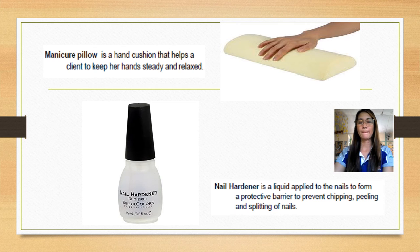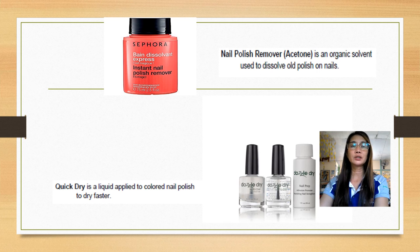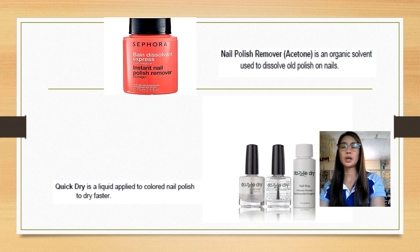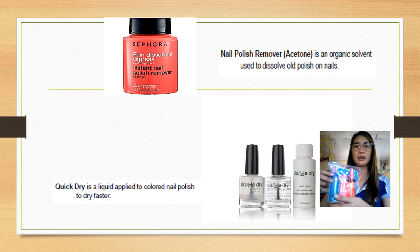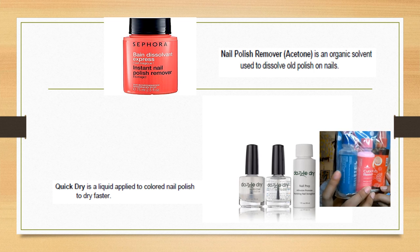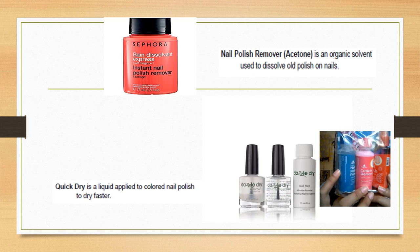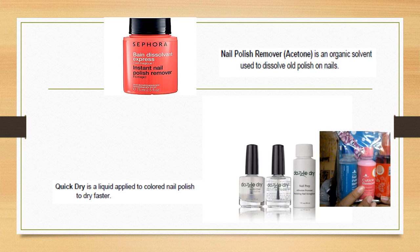Nail hardener is a liquid applied to the nails to form a protective barrier to prevent chipping and splitting. Nail polish remover, also known as acetone, is an organic solvent used to dissolve old polish from the nails.